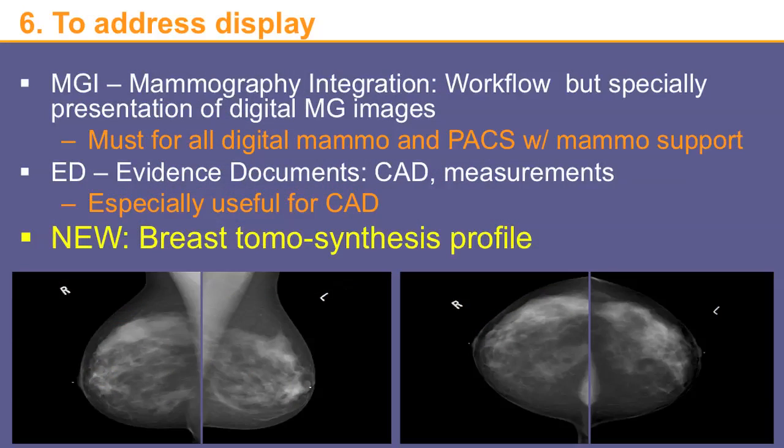As you look in the illustration, taking one image from one view and then the other image — for example, the left versus the right — you take the left and mirror that and display it with a chest view against each other. That's a very specific what we call hanging protocol for digital mammography. Just saying that you support the DICOM standard does not guarantee that you will display the images in this way.